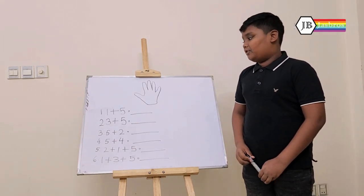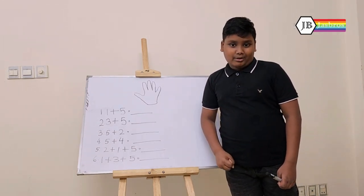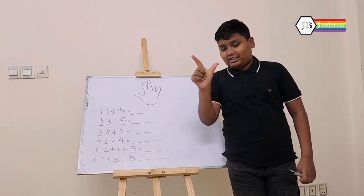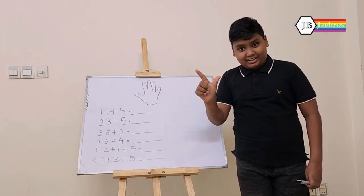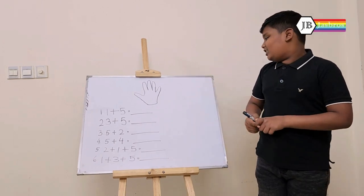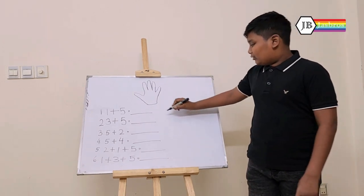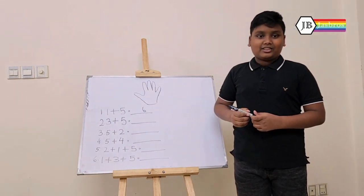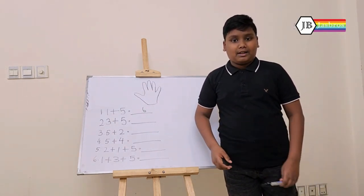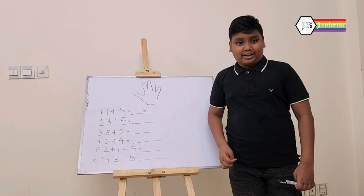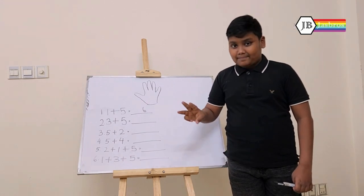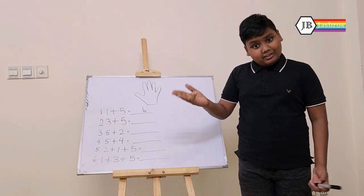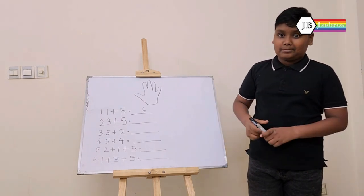First, we have 1 plus 5. So we take 1 and 5, and the answer is 6. So we are going to write 6. Next question is 3 plus 5. Now we are going to take 3 and plus 5, and the answer is 8. So let's write 8 on the whiteboard.